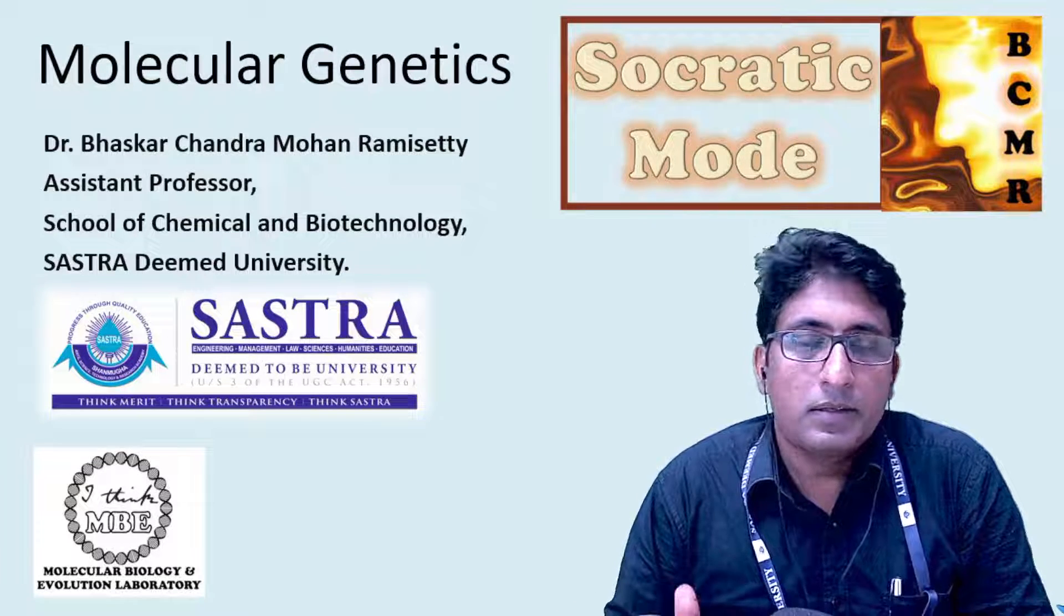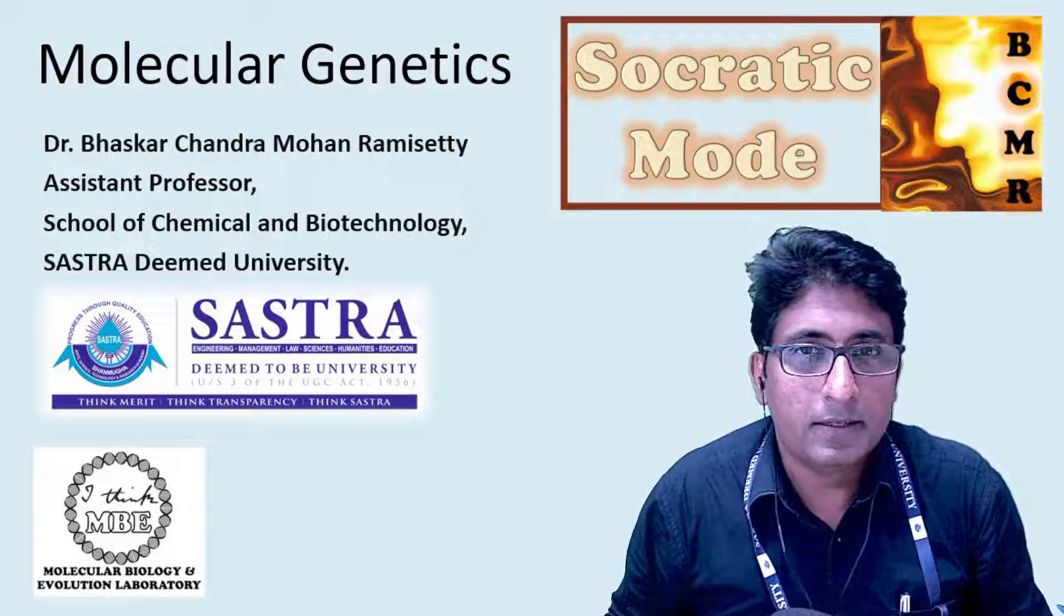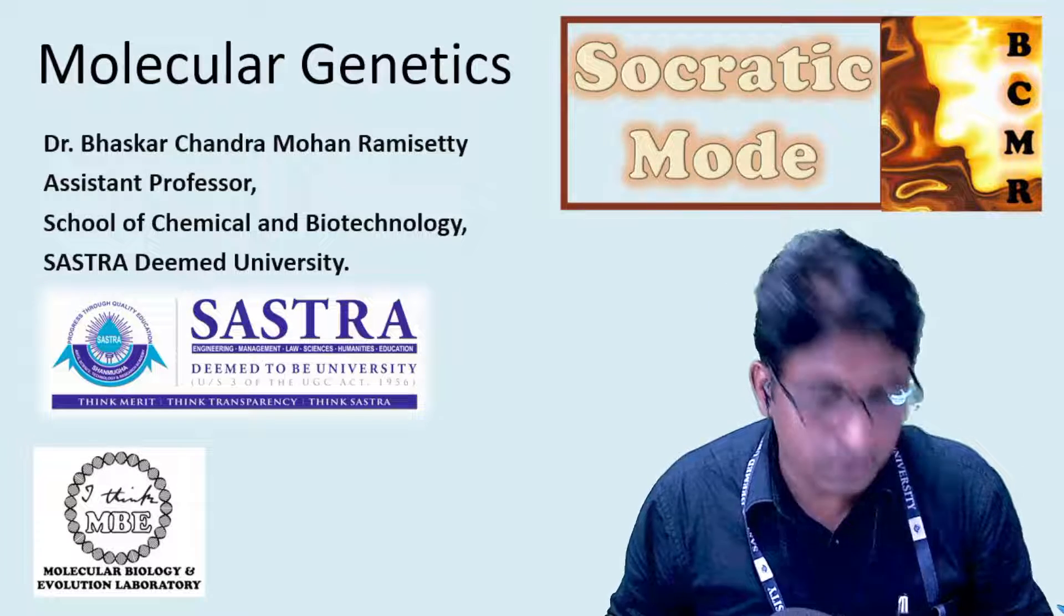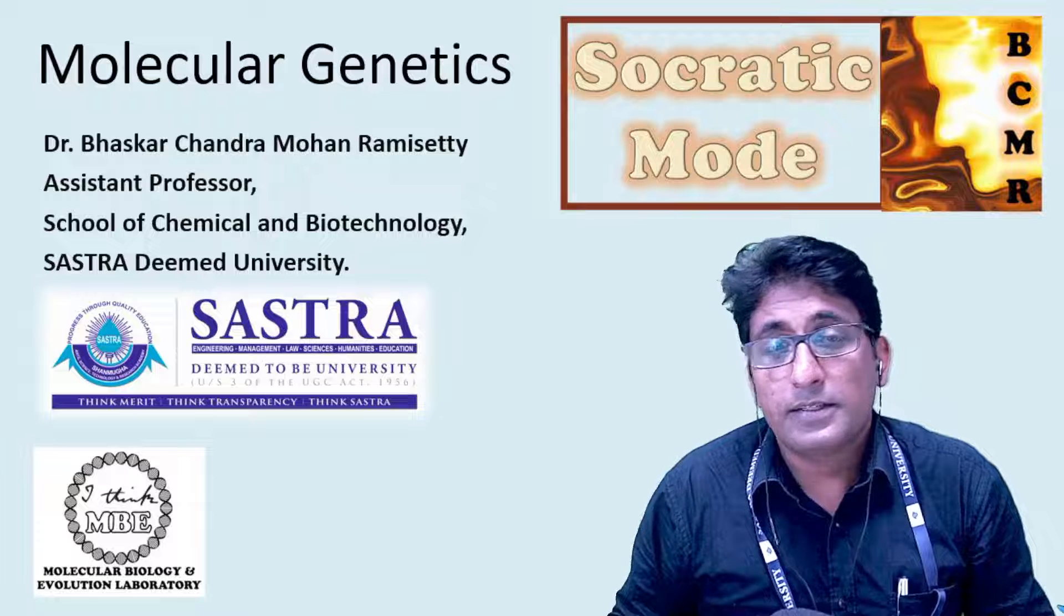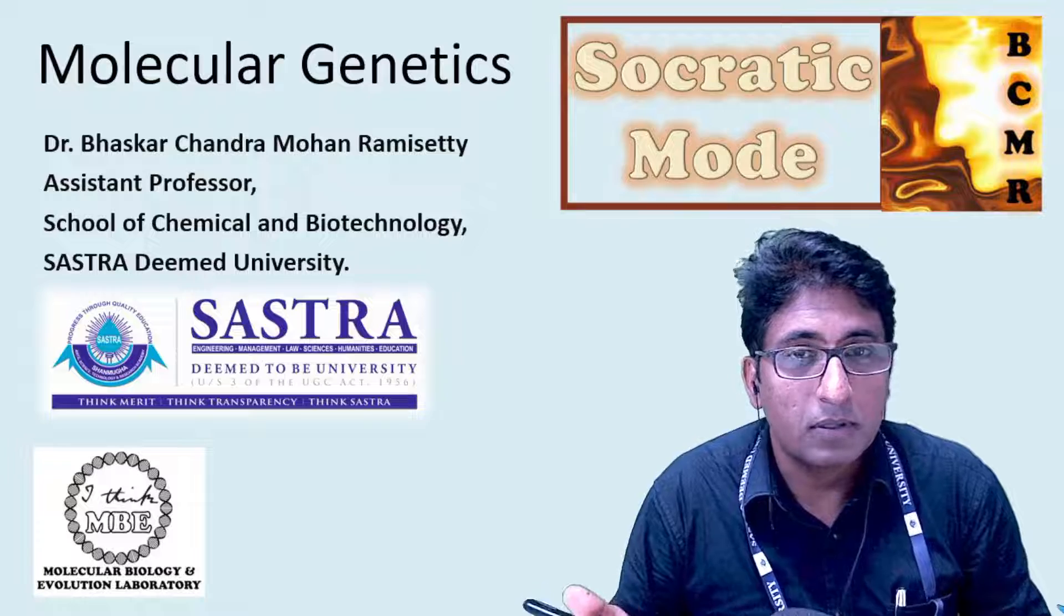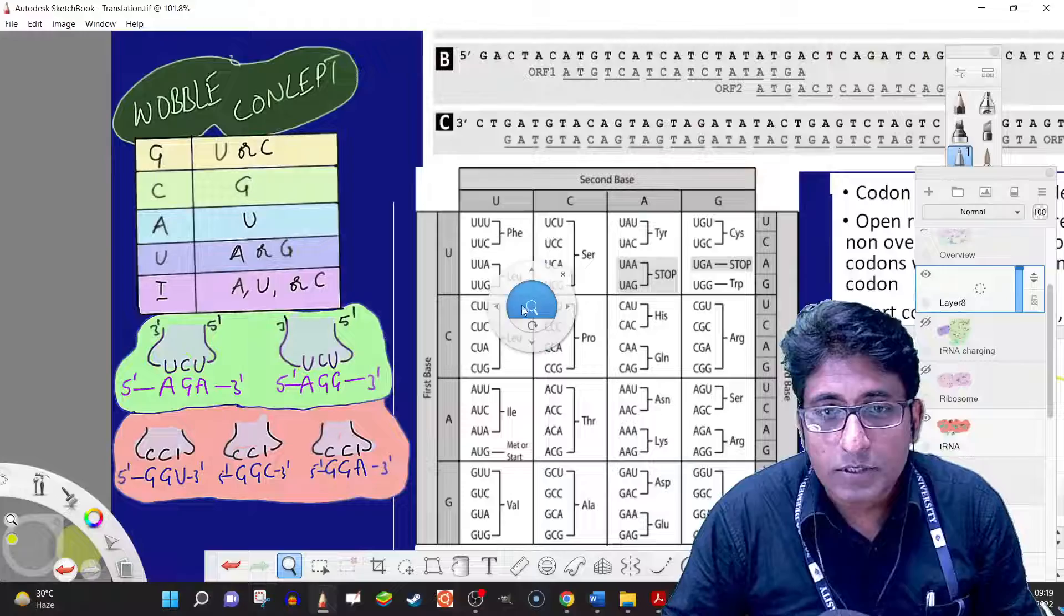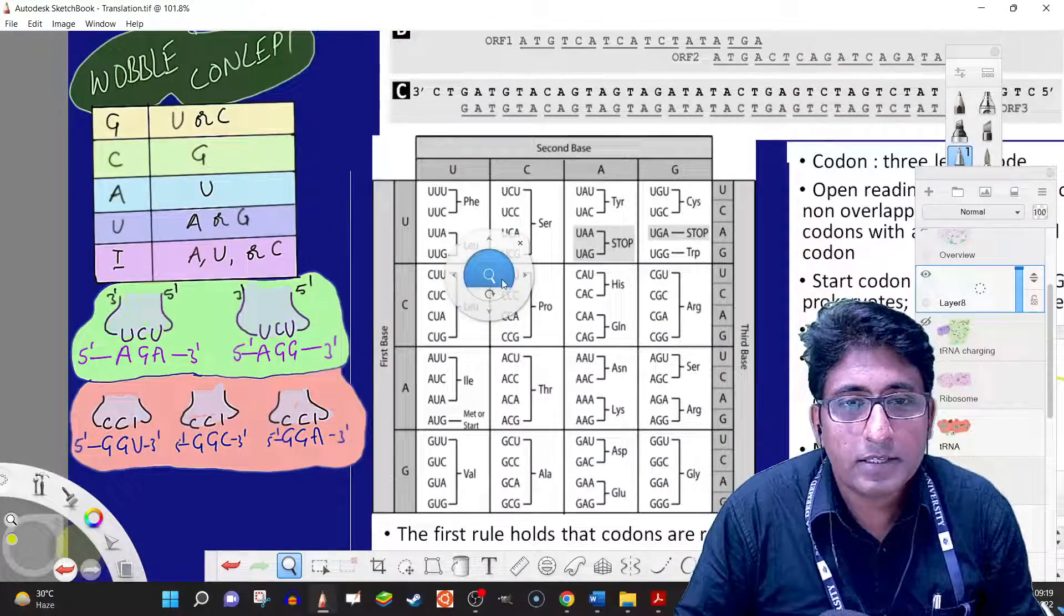There is also a concept called the wobble concept that will help us understand how one tRNA could possibly recognize multiple codons in the case of the genetic code.